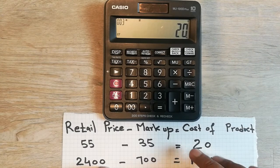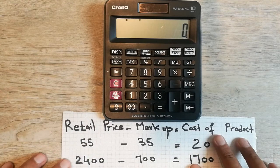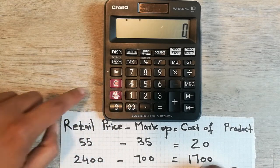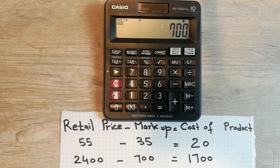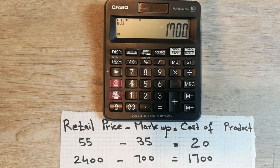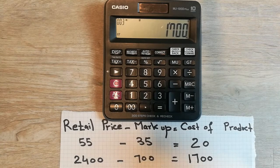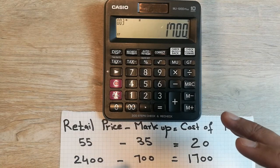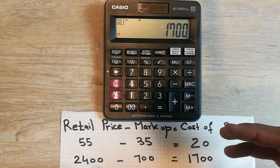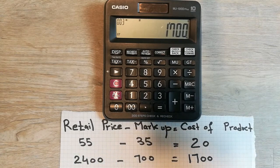Let's move to another example. This time the retail price of the item is 2400, and the markup is 700. As I told you, markup is profit plus operational cost. So retail price minus markup: 2400 minus 700 equals 1700. So 1700 is the cost of the product — what you purchase from the wholesale market. It does not include operational cost or profit; it's just the basic cost.